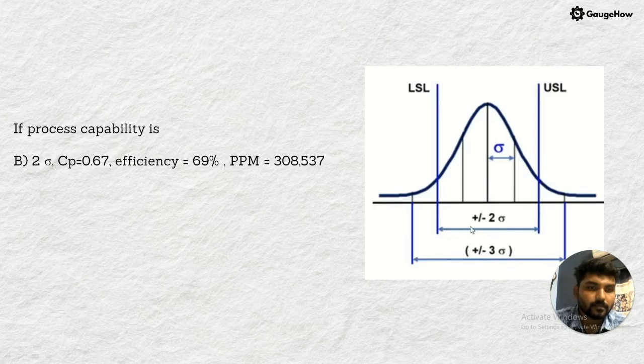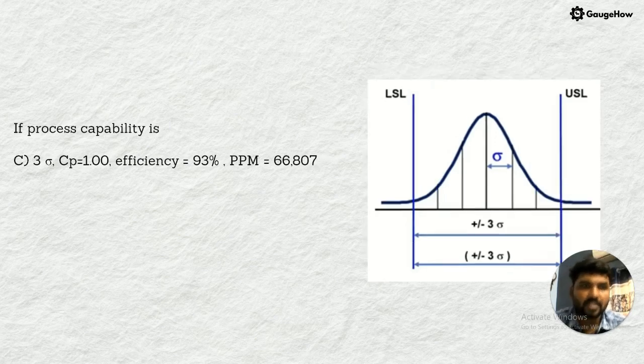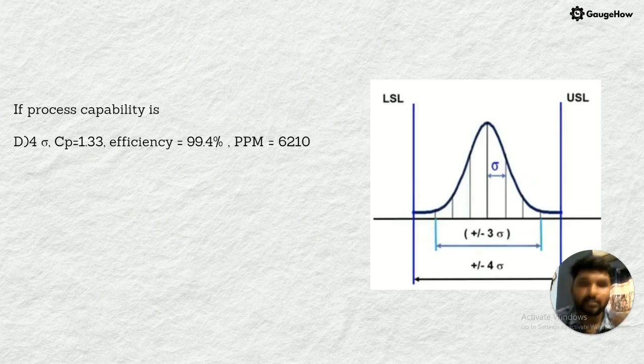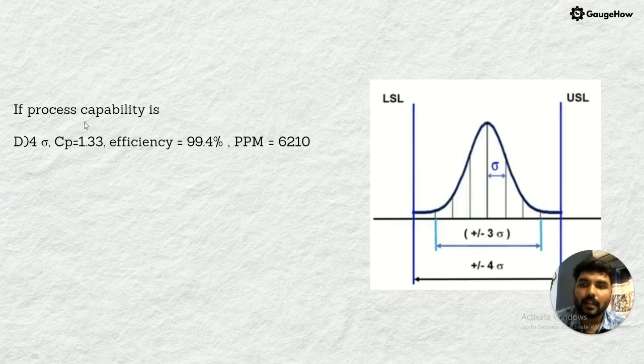This is a realistic, real-time example of the schematic views of Six Sigma levels. When after improvements the process reaches three sigma, the process capability will be one. The tolerance level and the process will be matched with efficiency 93 percentage and PPM 66,807. After improvements in the process, reducing quality defects and improving production efficiency, it reached four sigma with process capability 1.33, efficiency 99.4 percentage. The process is plus or minus three sigma. When compared to the process, it is less, so PPM will be 6,210 opportunities of defects.